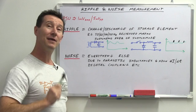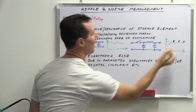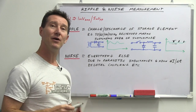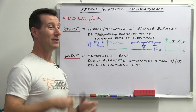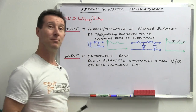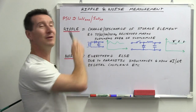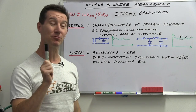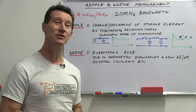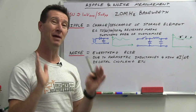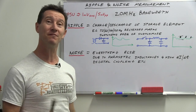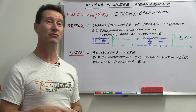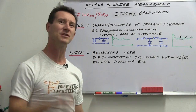In power supply specifications they lump ripple and noise together and give you two figures: a peak-to-peak value and an RMS value. Cheap supplies might just give you the RMS value because it's always going to be lower than the peak-to-peak. A noise figure is pretty useless unless you specify it over a particular bandwidth. A lot of manufacturers won't tell you the bandwidth, and there's no real standard for it.